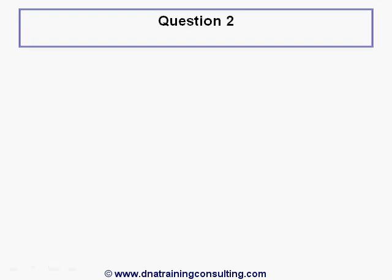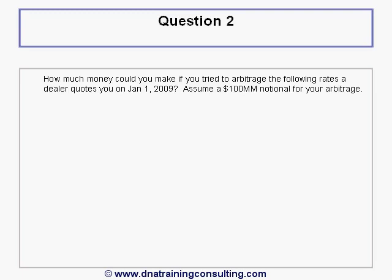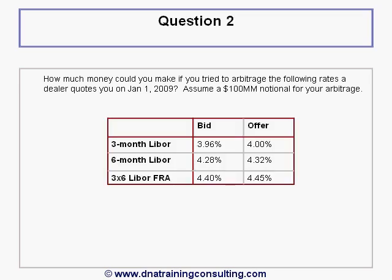Question 2. How much money could you make if you tried to arbitrage the following rates? A dealer quotes you on January 1st, 2009. Assume a $100 million notional for your arbitrage.